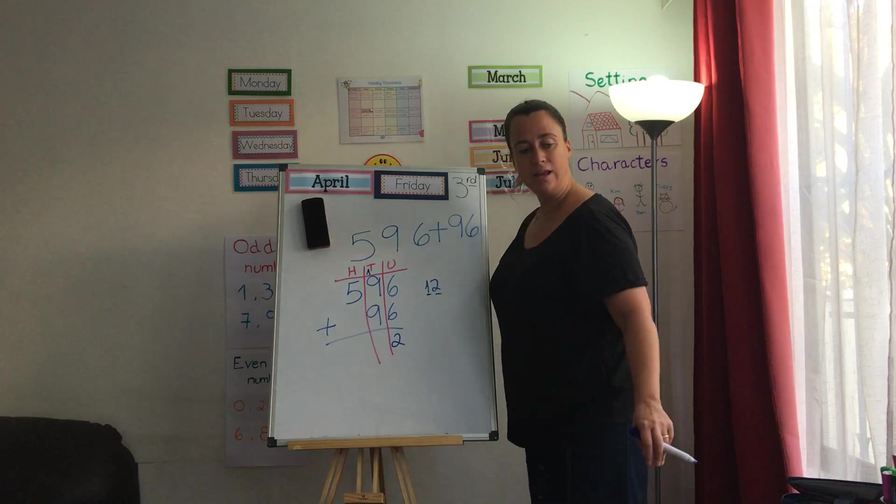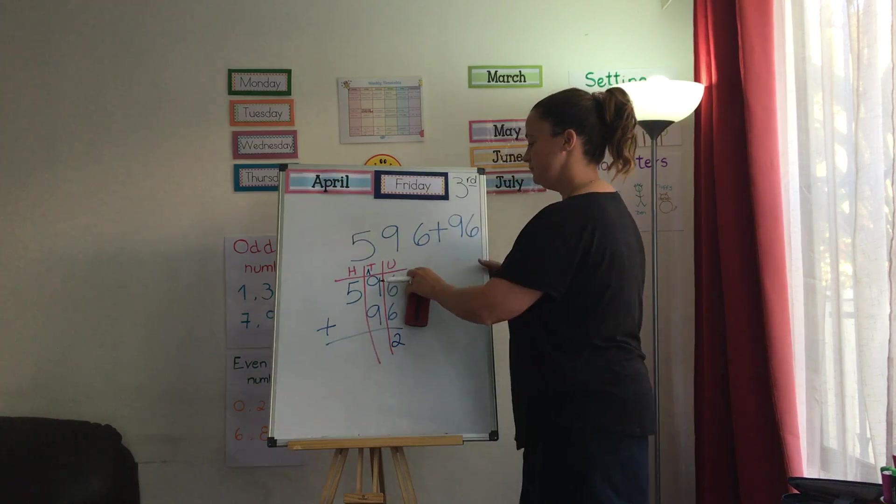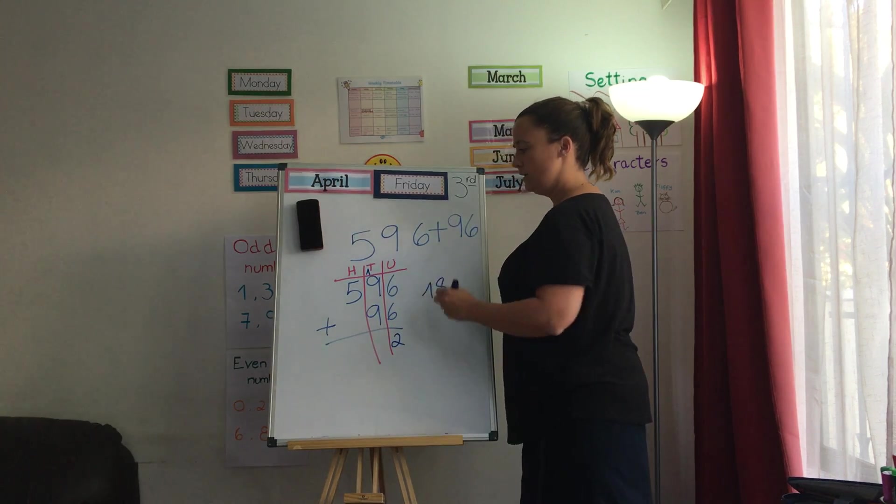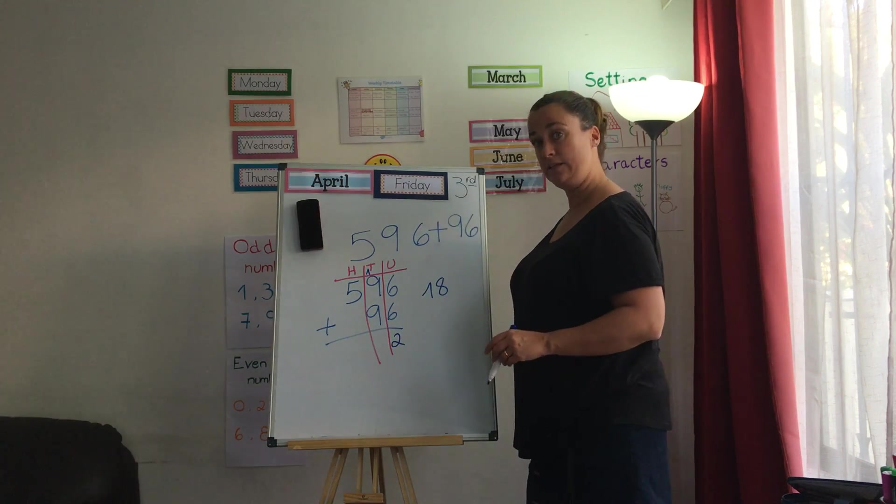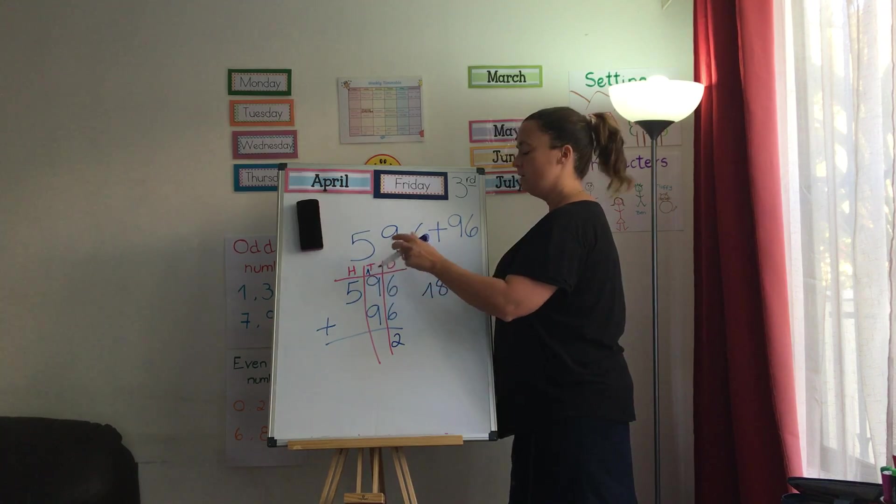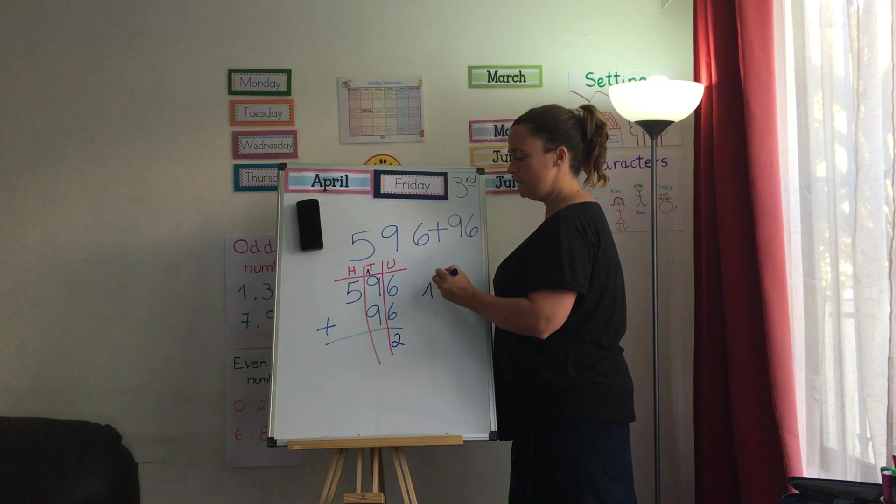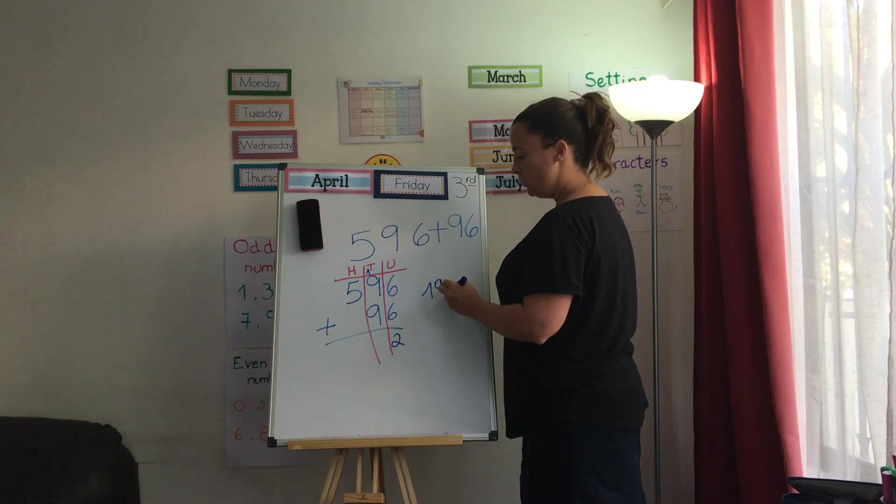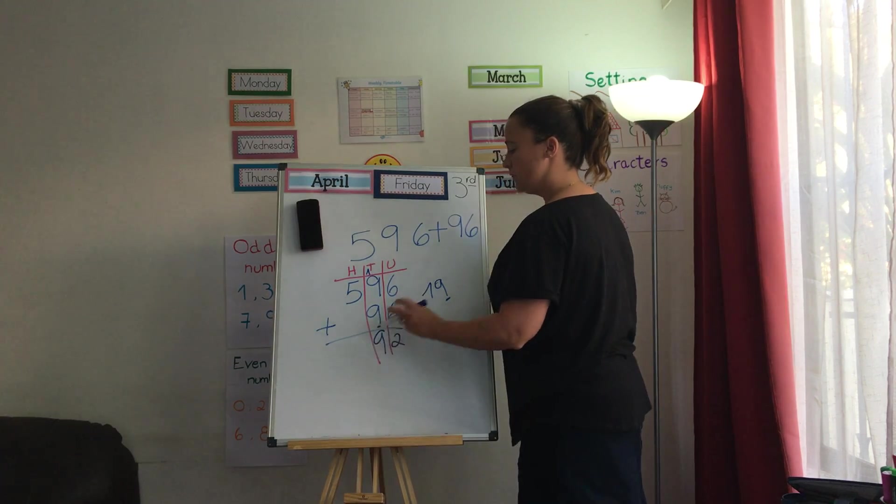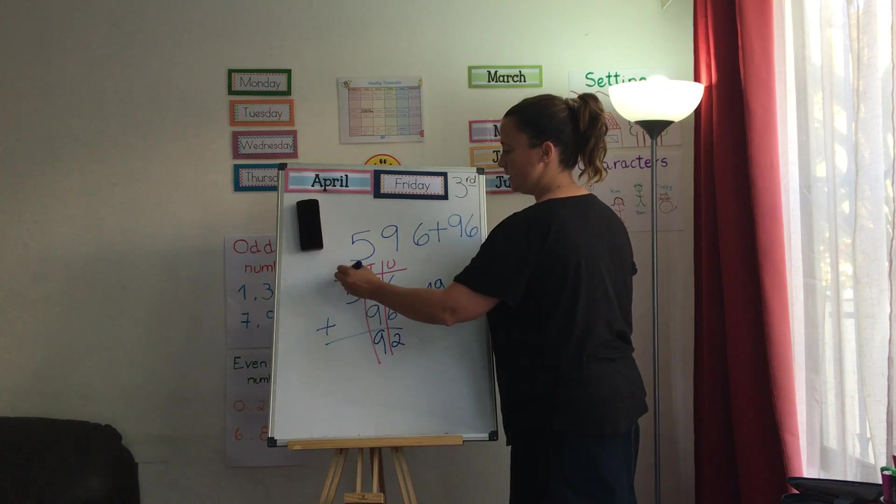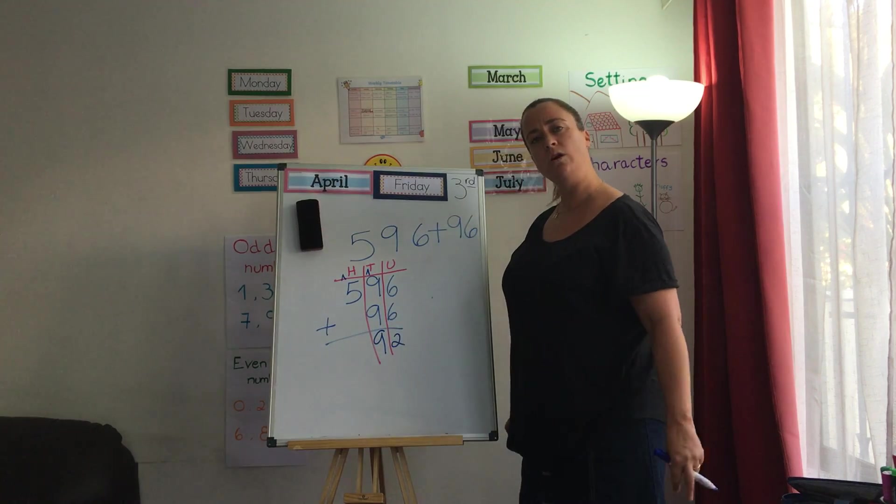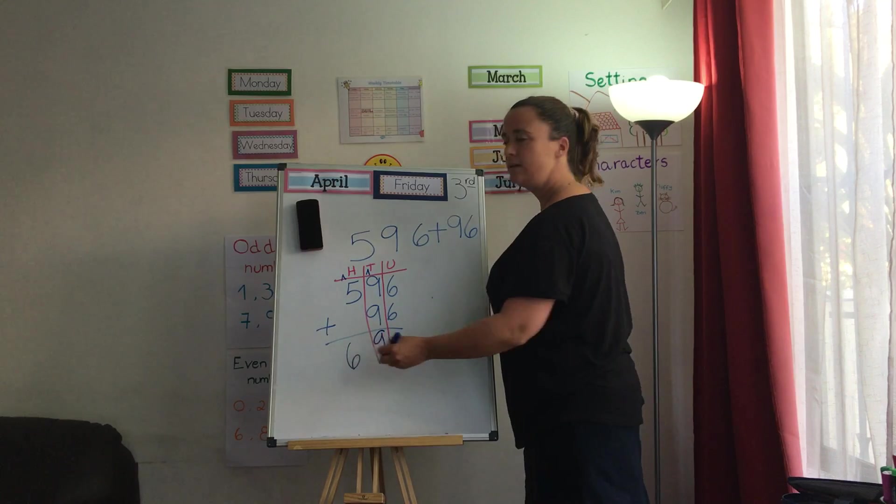Now, 9 plus 9. Anybody? Okay. 18. 9 plus 9 is 18. But don't forget about our little friend up here. Good. So he's not an 18 anymore. He's a 19. Where do I put my 10s one? Well done. And my 100s one? At the top. Good job, guys. And 5 plus 1 is 6. Super.